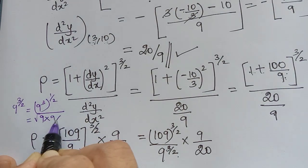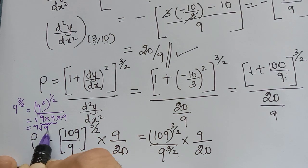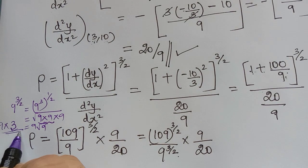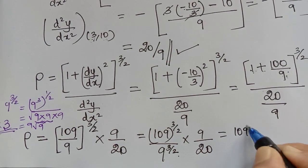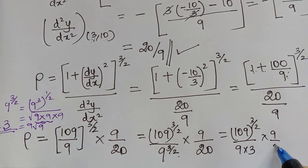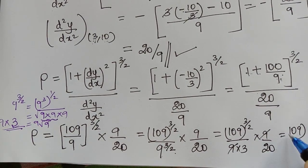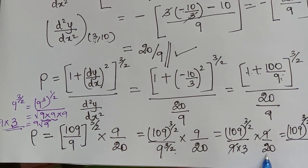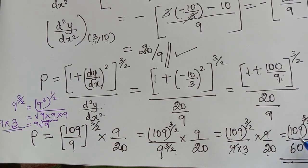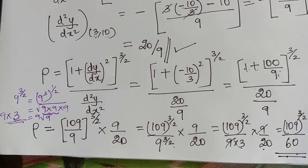Since 9^(3/2) = 9 × √9 = 9 × 3 = 27, substituting back: rho = 109^(3/2) / (27) × (9/20). Cancelling the two 9s gives the final answer: rho = 109^(3/2) / (3 × 20) = 109^(3/2) / 60. Therefore, the radius of curvature at the point (3, 10) is 109^(3/2) / 60.